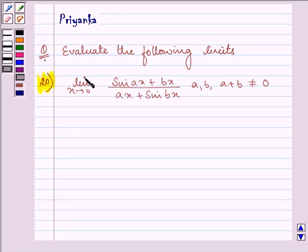Now here the limit which is given to us is limit x approaches 0, sin ax plus bx upon ax plus sin bx, where a, b and a plus b are not equal to 0.